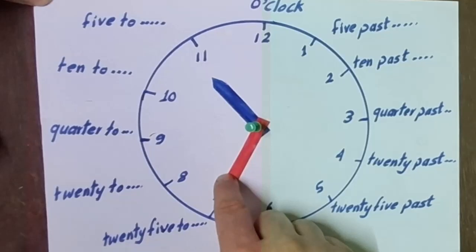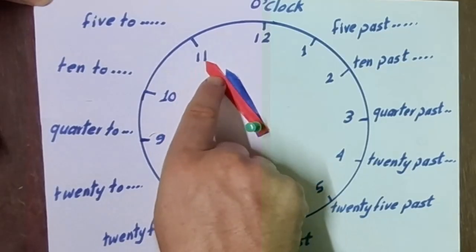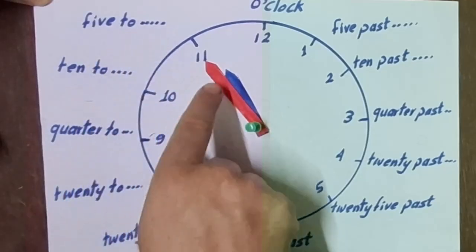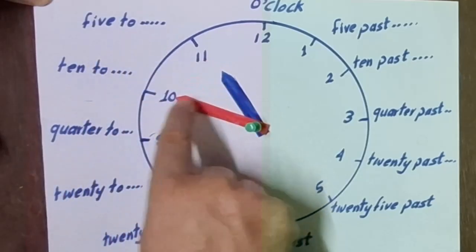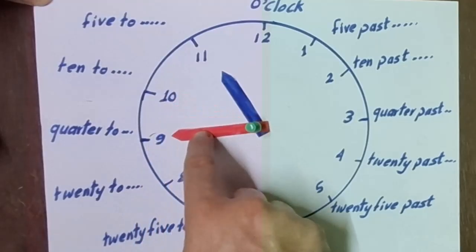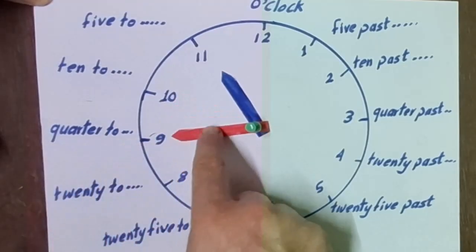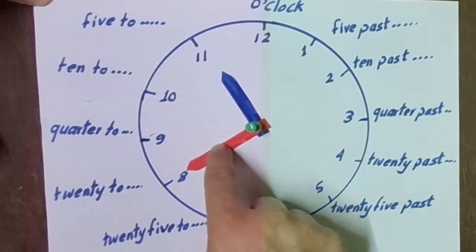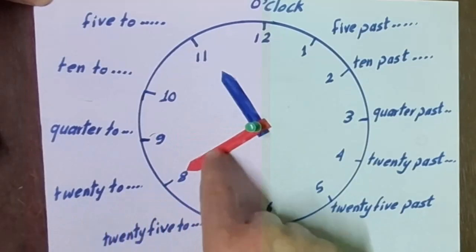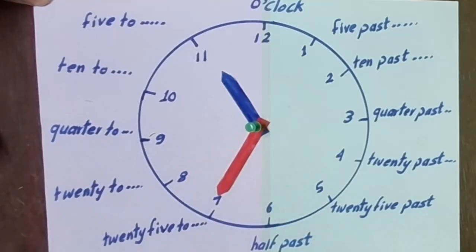When the long hand goes to the left side, we say 'to'. So when it's on 11, we say 'five to' the hour; on 10, 'ten to' the hour; on 9, 'quarter to' the hour; on 8, 'twenty to' the hour; and on 7, 'twenty-five to' the hour.